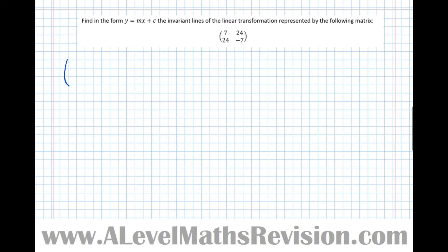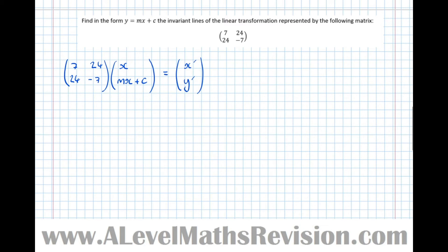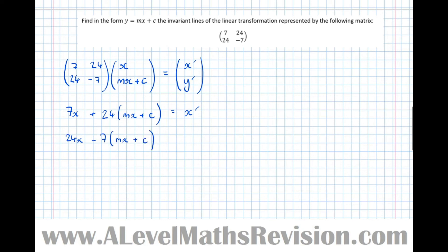So we apply the matrix (7,24; 24,−7) to a general point on the line, with x-coordinate x and y-coordinate mx plus c, to find the image x' and y'. Multiplying out: x' equals 7x plus 24(mx plus c), and y' equals 24x minus 7(mx plus c). I'm not worrying about the invariant condition yet — just finding the image first.